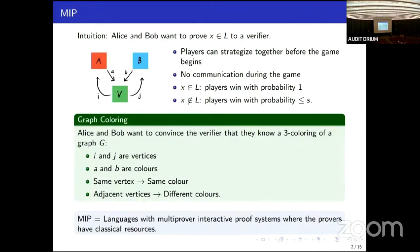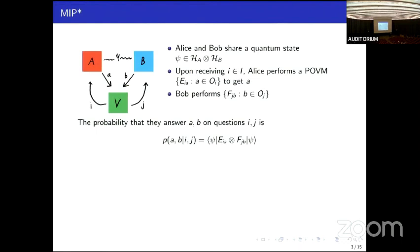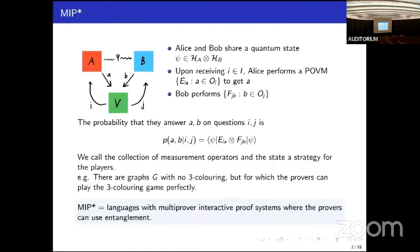We denote by MIP the class of languages with multi-prover interactive proof systems where the provers can use only classical resources like shared randomness. But if we live in a quantum mechanical universe, then we can imagine that Alice and Bob share some entanglement. Here they share a quantum state in a tensor product Hilbert space. Upon receiving her question I, Alice performs a POVM to condition her answer A on, and Bob does the same. The probability that they get answer A, B on questions I, J is just the expectation value of the tensor product of their measurements.